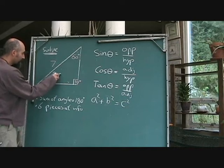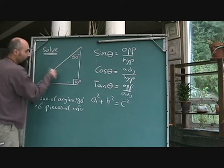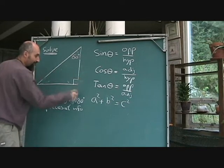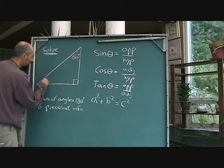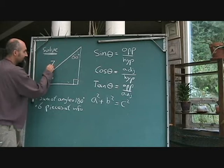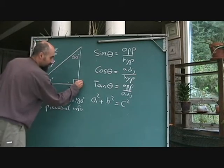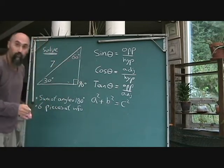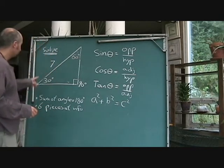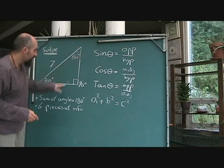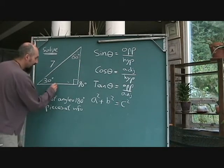What I'm going to do is I'm going to change up the colors here so you know which pieces of info we have and which ones we're solving for. So this was 30 that was given, this is seven that was given, and this is right angle, which is 90. So we just solved for one of the angles. Now what we want to do is solve for these two sides. Let's call these X and Y.